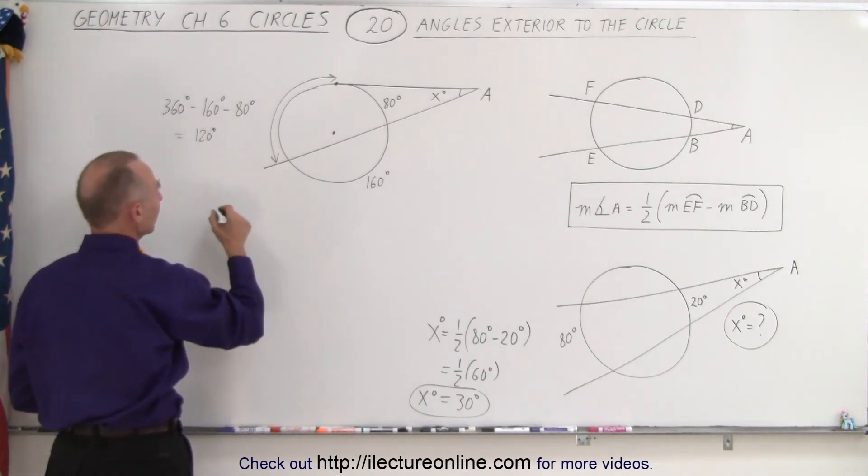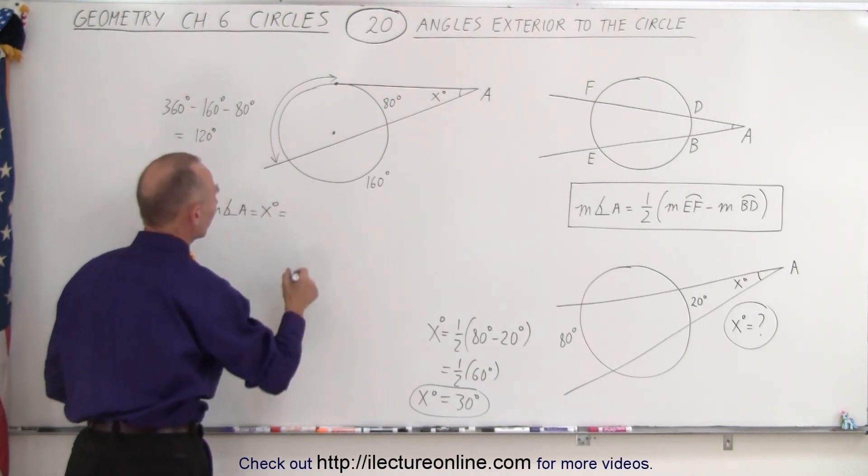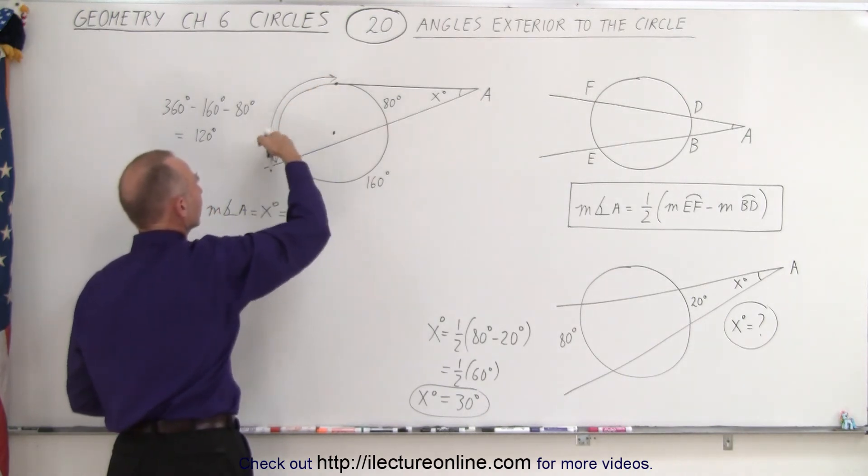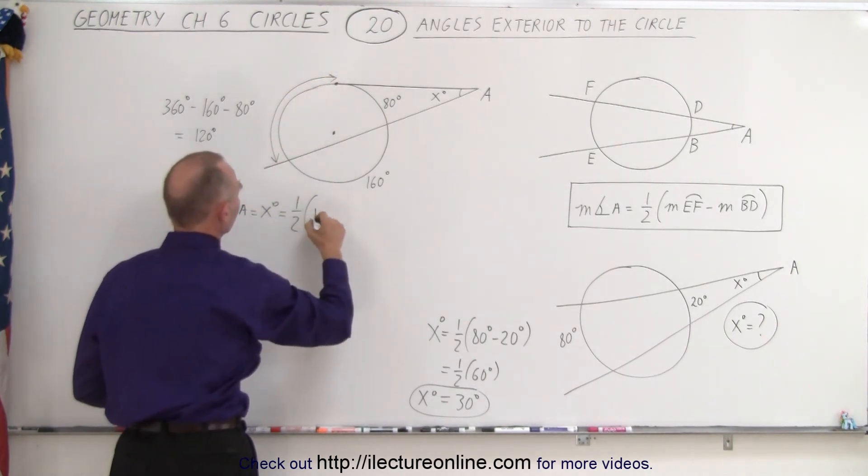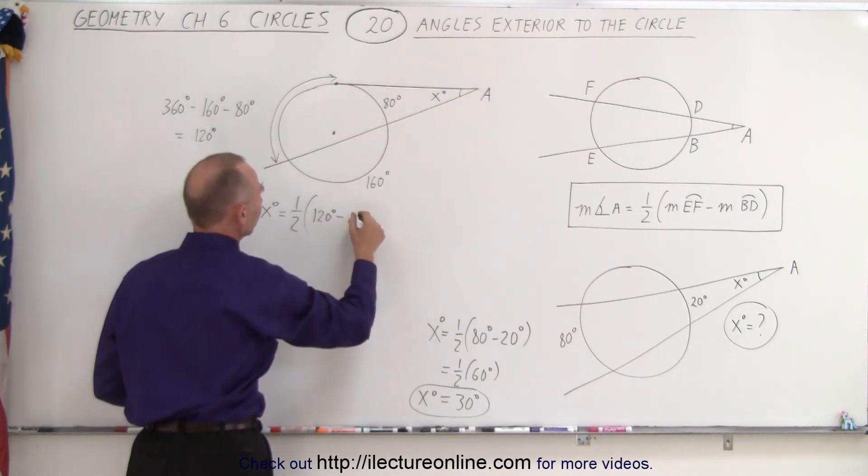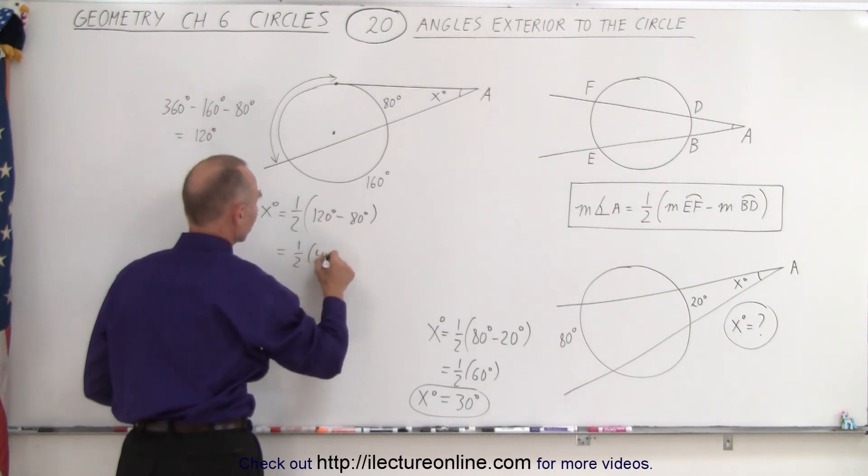So now we can say that the measure of angle A, which is x degrees, equals one half the measure of the arc intersected on the far side, which is 120 degrees, minus the arc on the closed side, which is 80 degrees. So this would be one half times 40 degrees, or 20 degrees.